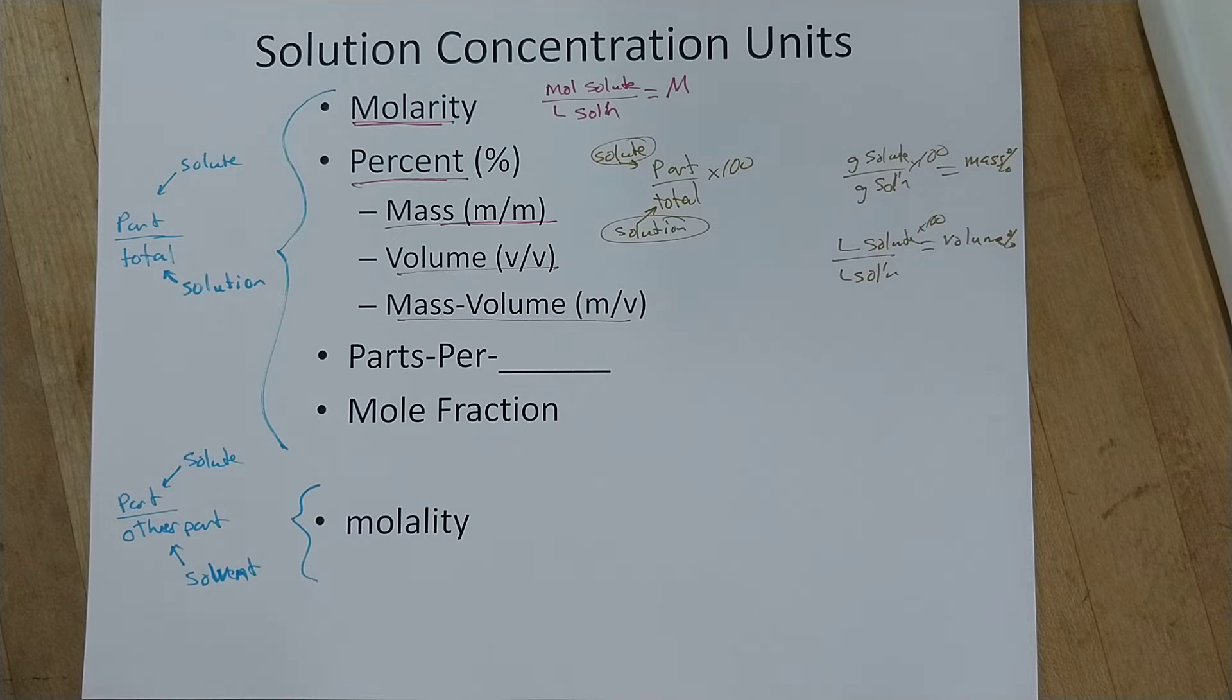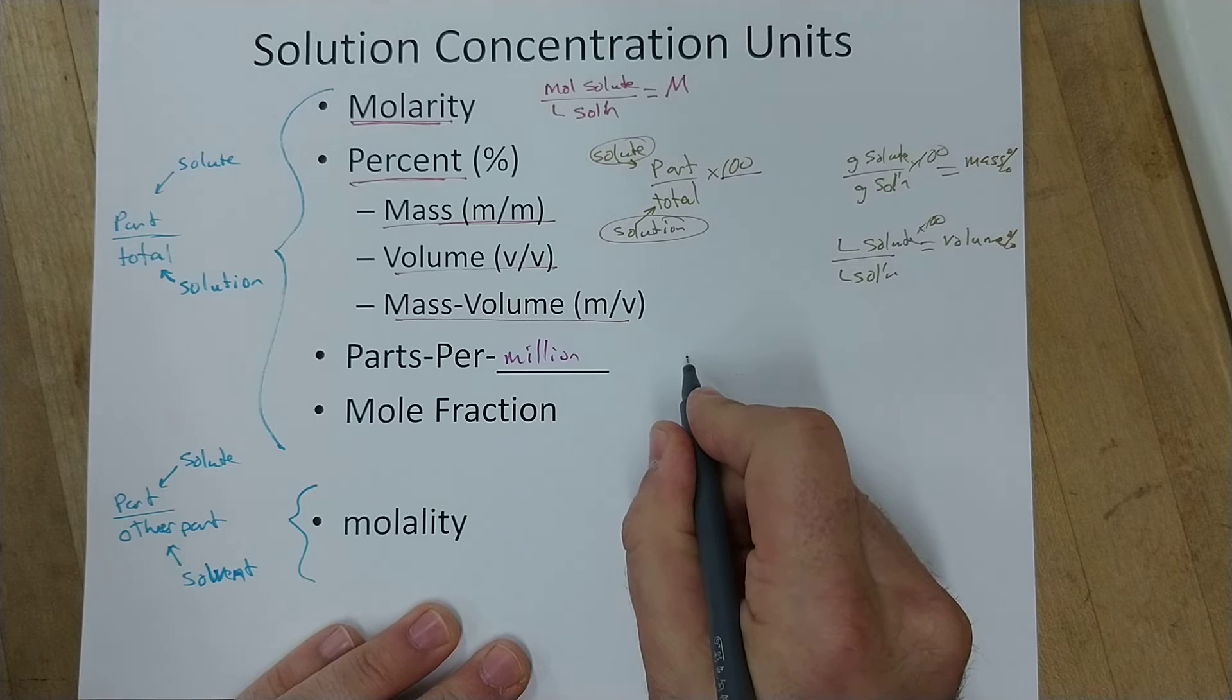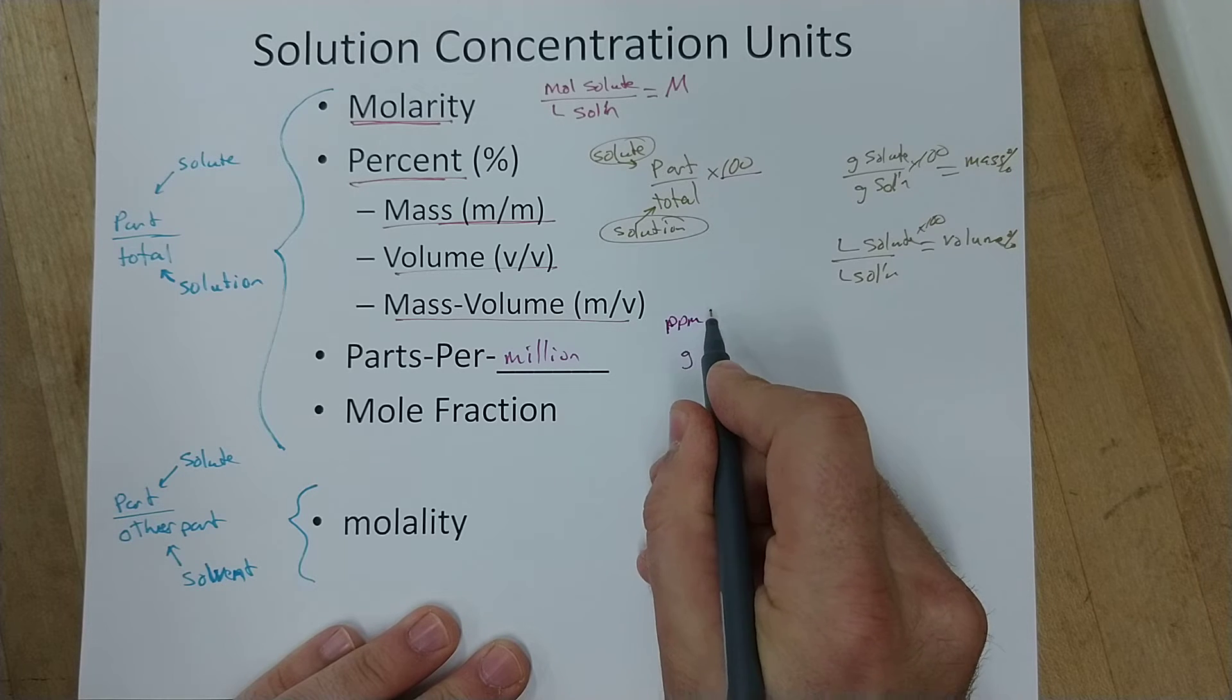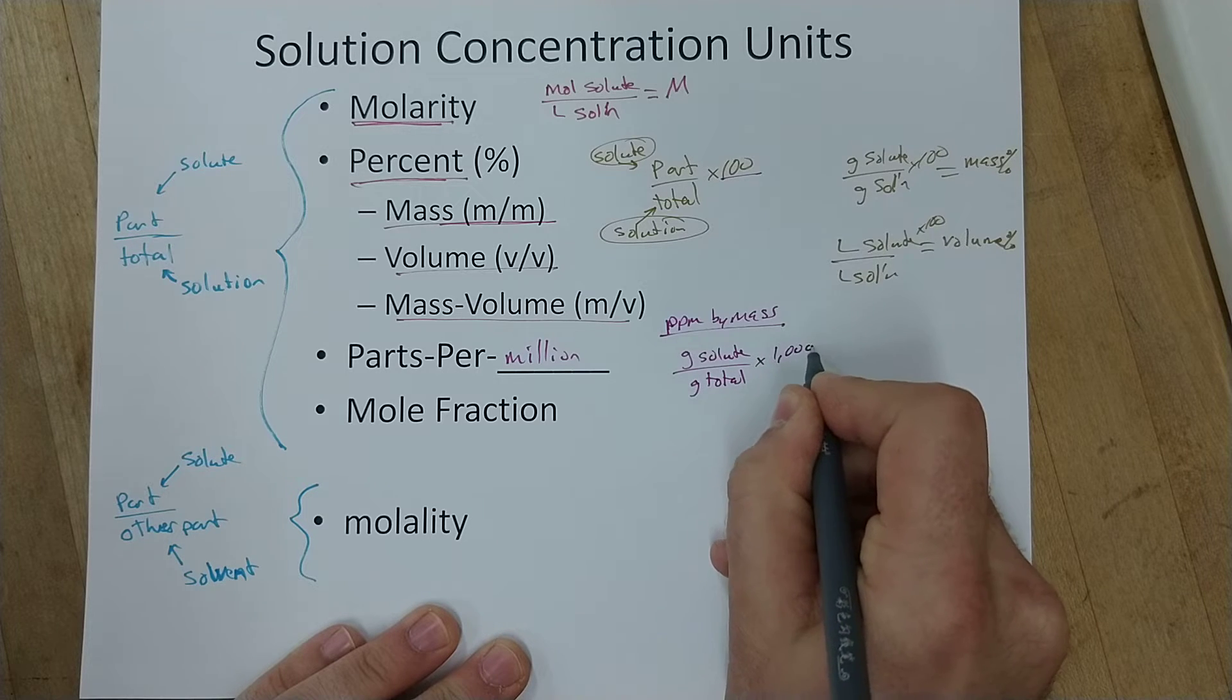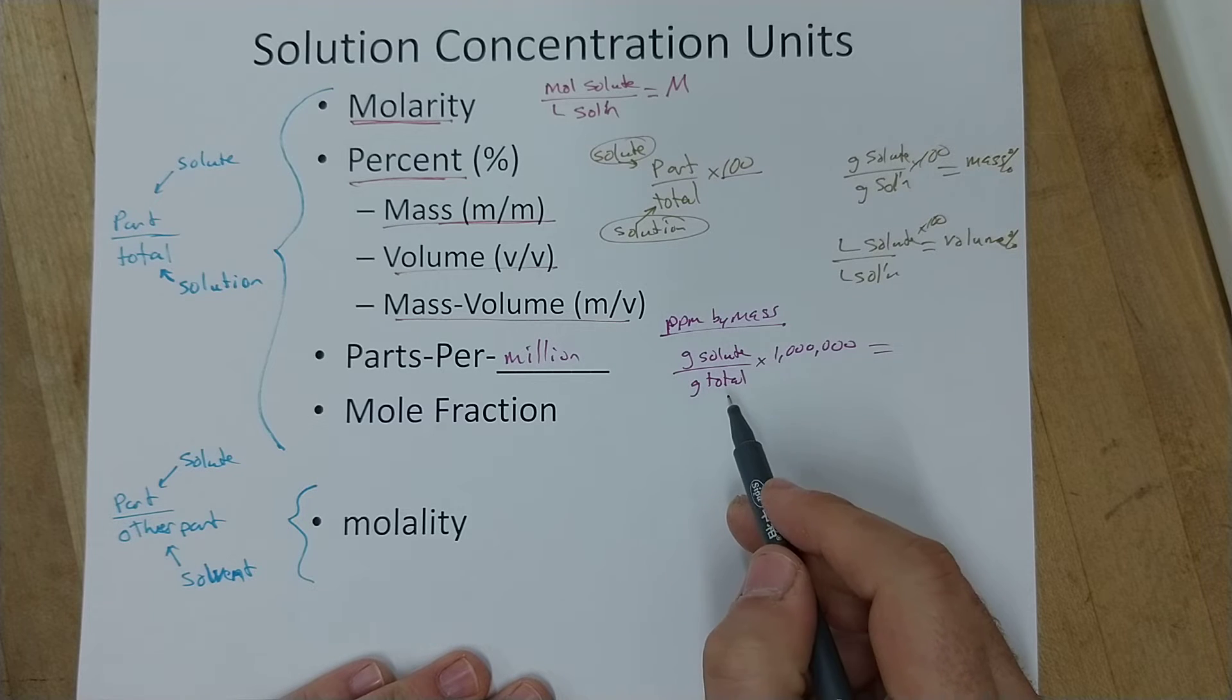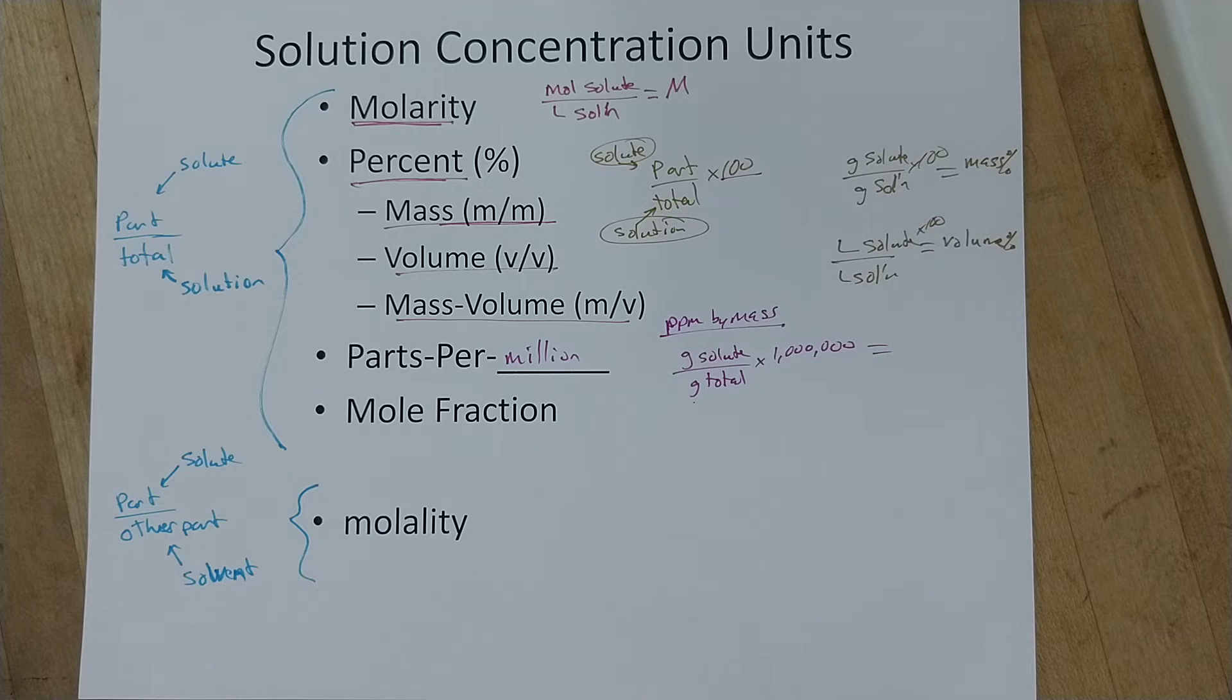So this parts per unit works the exact same way as that actually. Parts per million for example works just like a percent except instead of multiplying by a hundred you multiply by a million. So it's the part per million by mass. A ppm by mass would be grams of the solute, the part over grams of the total times a million. Or if you wanted a part per million by volume it would be milliliters over milliliters times a million. If you wanted a part per billion it would be grams over grams times a billion. It's pretty much exactly like a percentage.